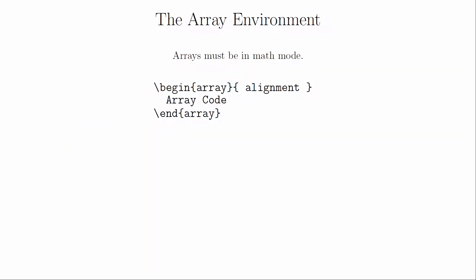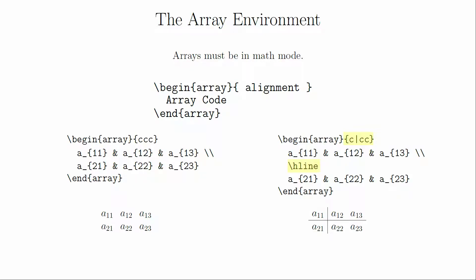Arrays work on the exact same principle as tables, except that arrays must be called inside math mode. The individual cells are assumed to be in math mode, so all your symbols, subscripts, and superscripts will be available to you. If you wanted to have vertical and horizontal bars, you can create them in the exact same way.